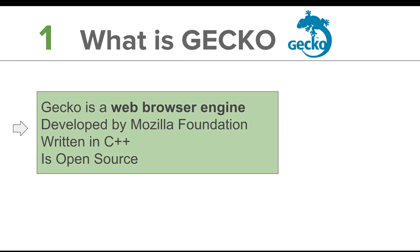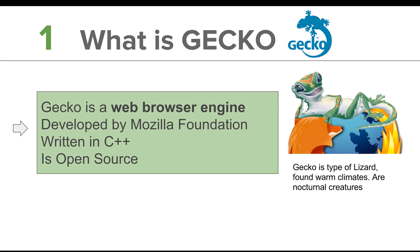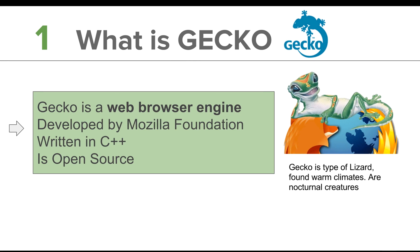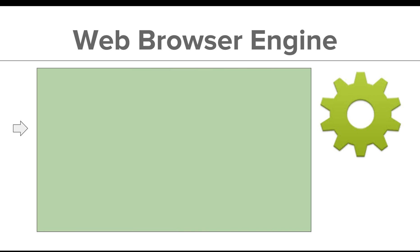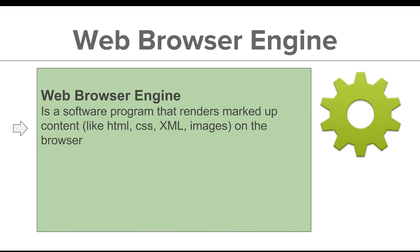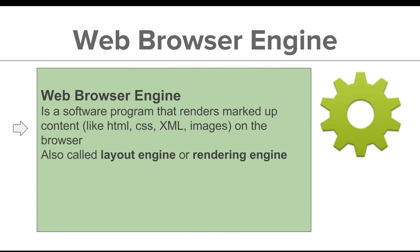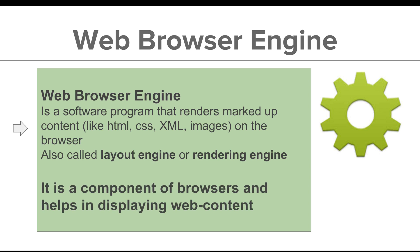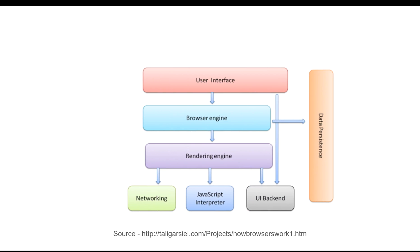Gecko is a web browser engine developed by the Mozilla Foundation, written in C++, and is open source. A web browser engine is a software program that is used to control and render the content on the browser, and therefore it is also known as a layout engine or rendering engine.